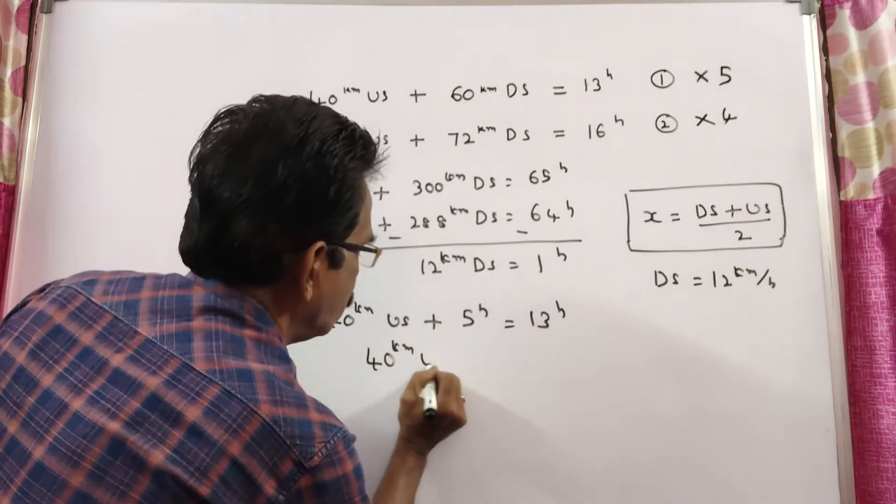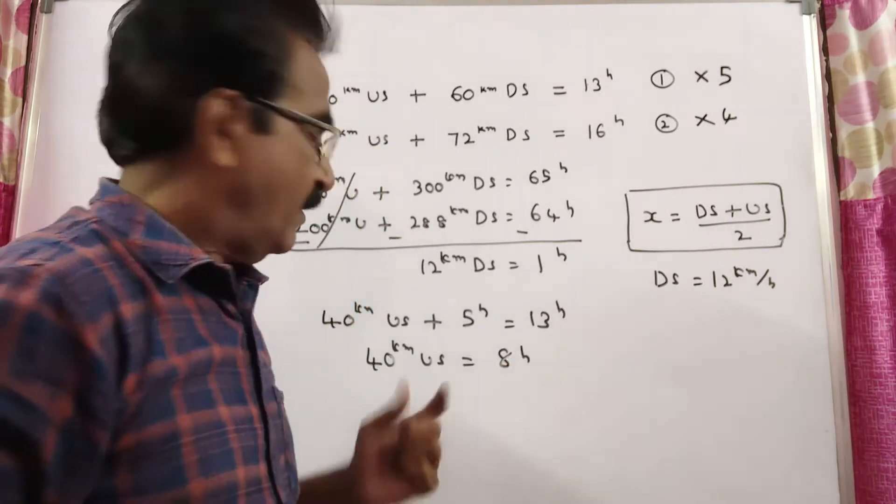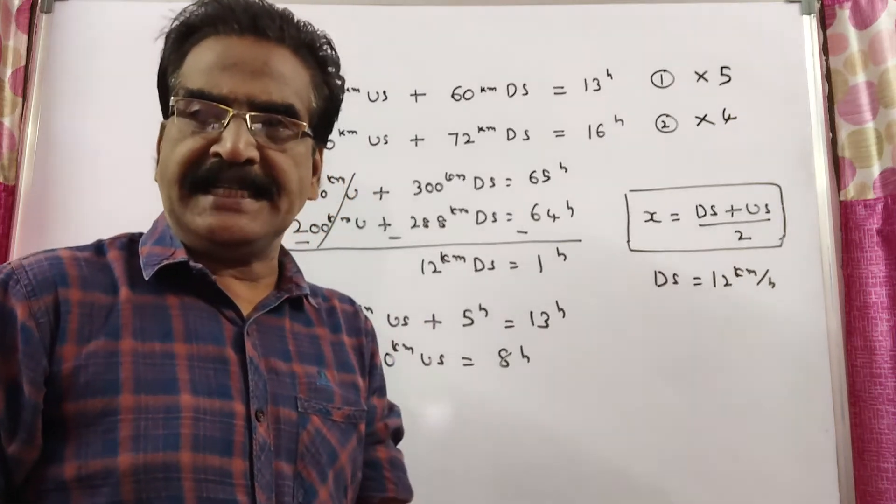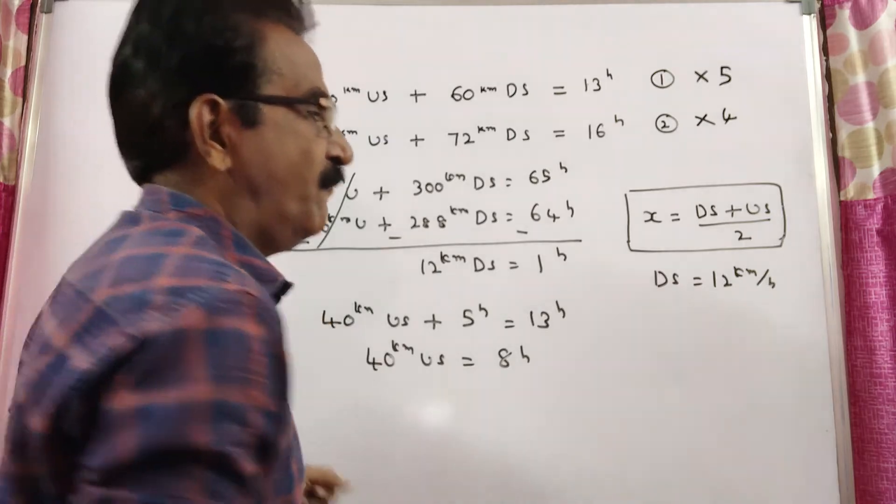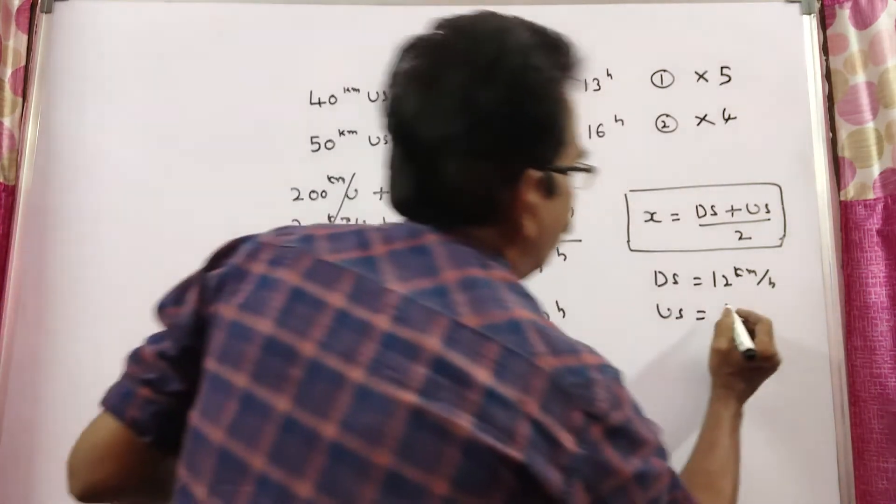40 km upstream is equal to 13 minus 5, 8 hours. 40 km in 8 hours means US speed 40 by 8, 5 kmph. US is equal to 5 kmph.